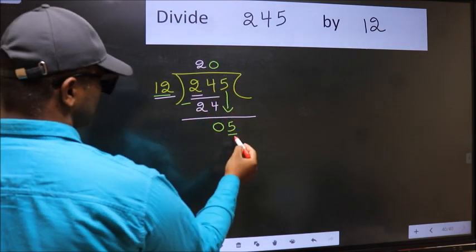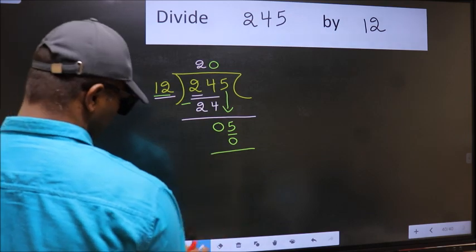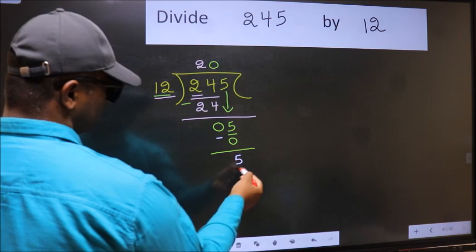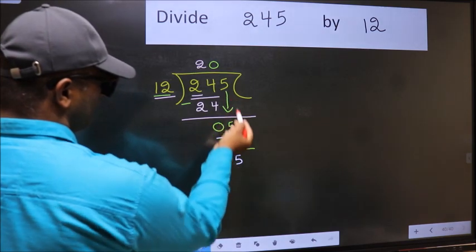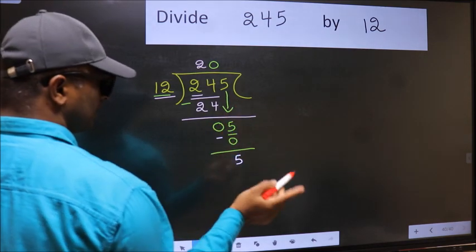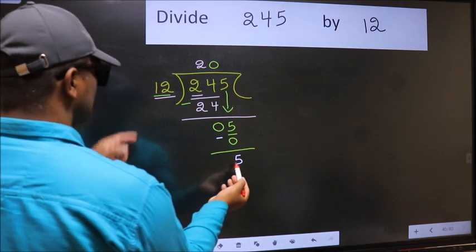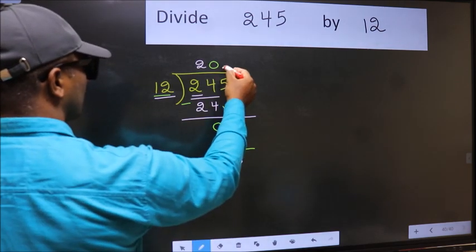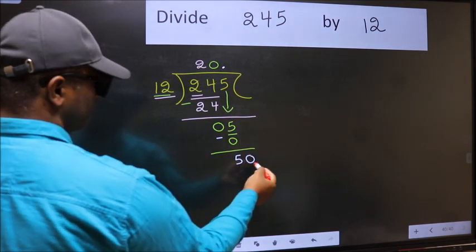So 12 into 0 is 0. Now you should subtract. 5 minus 0 is 5. Over here, we did not bring any number down. And 5 is smaller than 12. So now you can put dot and take 0. So 50.